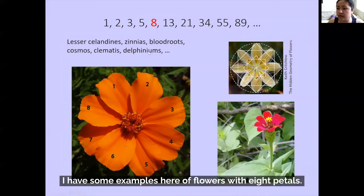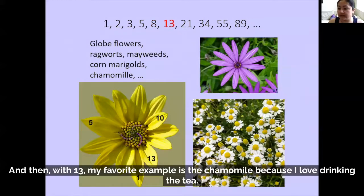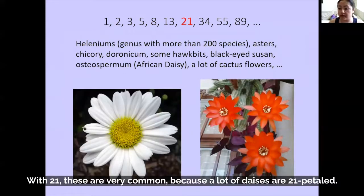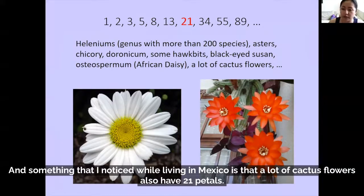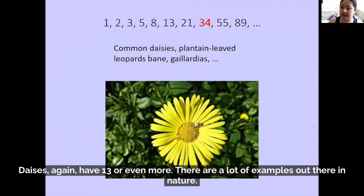I have some examples here of flowers with eight petals, and then with 13 — my favorite example is the chamomile because I love drinking the tea. With 21, these are very common because a lot of daisies have 21 petals. Something I noticed while living in Mexico is that a lot of cactus flowers also have 21 petals. I have here an example of a cactus flower from my mom's garden. Daisies again can have 13 or even more.